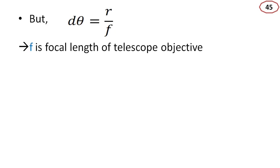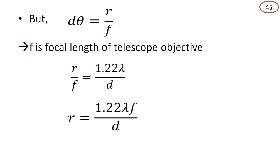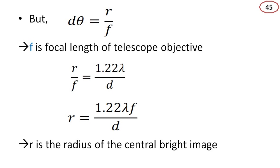From the equation angle equals arc by radius, d theta equals R by f, where f is the focal length of the telescope objective. Comparing these two equations, we get R by f equals 1.22 lambda by D, or R equals 1.22 lambda f by D, where R is the radius of the central bright image.